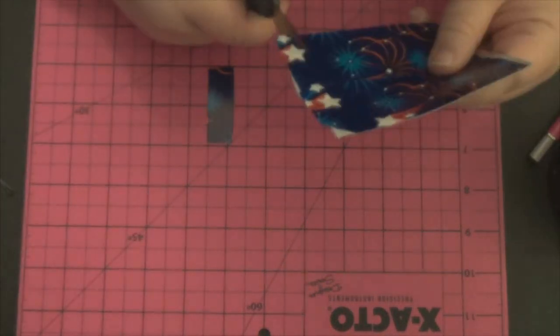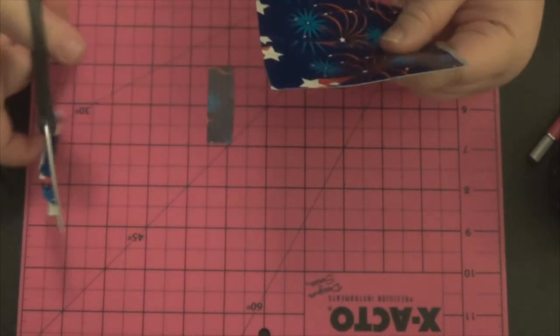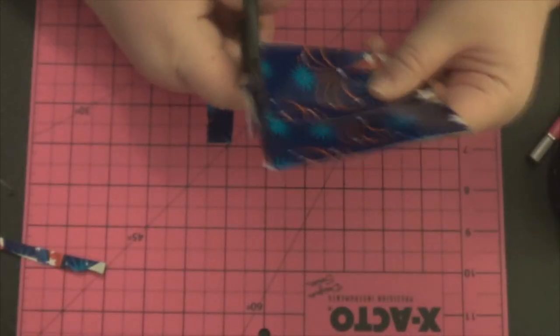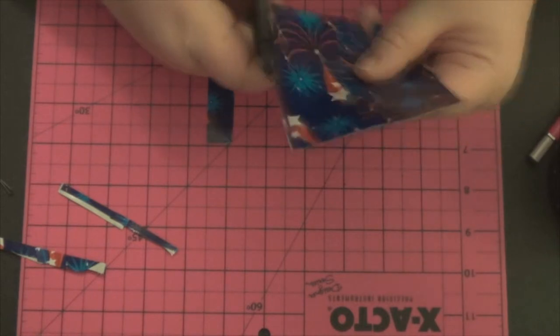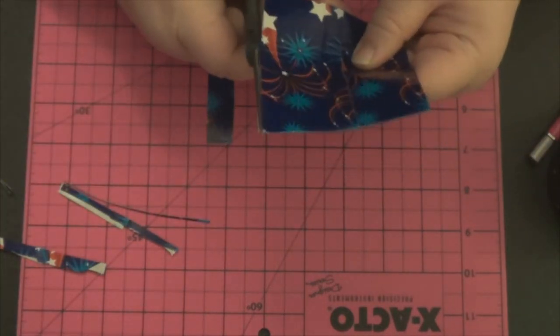Then I'm going to take a pair of scissors and I'm just going to cut off that sticky that's on each side. So you want to make sure you cut any sticky off of all four sides just so that it doesn't show once you're done.